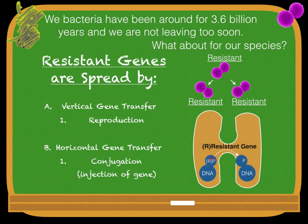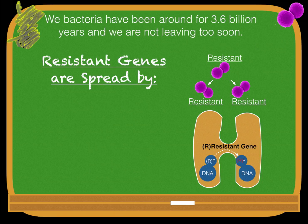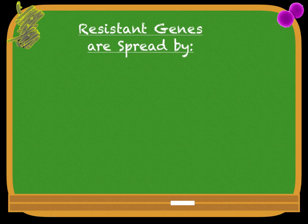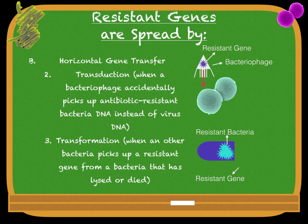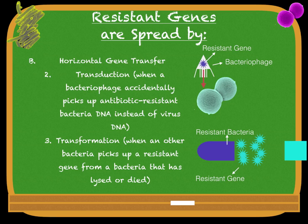Resistant genes are spread by vertical gene transfer — one method being reproduction — and horizontal gene transfer. Horizontal gene transfer includes: conjugation, as shown in the images; transduction, when a bacteriophage accidentally picks up an antibiotic-resistant bacteria's DNA instead of virus DNA; and transformation, when other bacteria pick up a resistant gene from bacteria that has lysed or died, such as in this graphic.